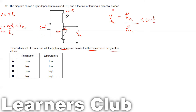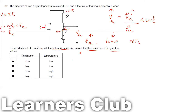For the thermistor's output voltage to be greatest, the resistance of the thermistor must also be greatest. For an NTC thermistor, resistance is inversely proportional to temperature — so high resistance means low temperature. This rules out options C and D.